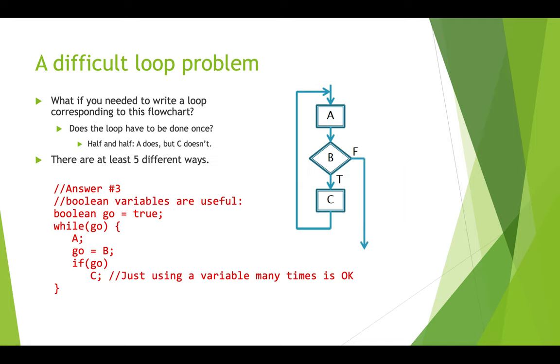A third way to approach this problem is to actually create a Boolean variable, and that's to capture the result of our test B. So when we do it this way, what we do is first of all we create a Boolean variable, we're going to call it go, and we set it to true. And we say while go is true. And because we've set this to true, this will cause this to be executed at least once.